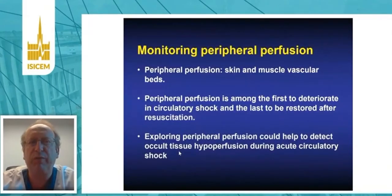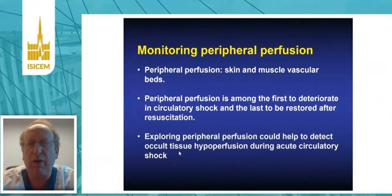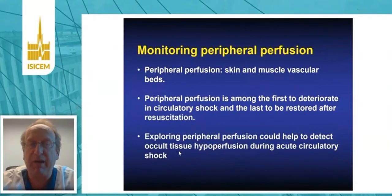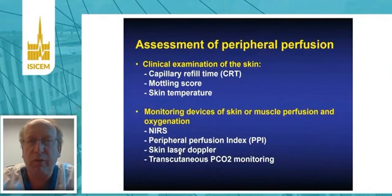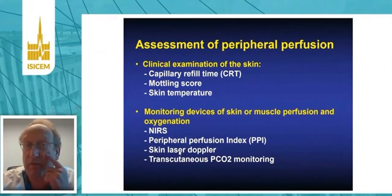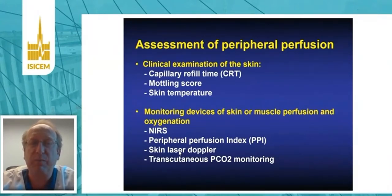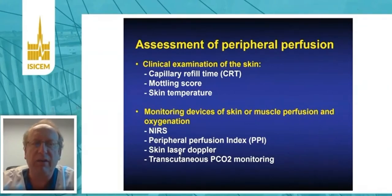Another approach to tissue perfusion monitoring is monitoring peripheral perfusion — meaning skin and musculovascular beds. Peripheral perfusion is among the first to deteriorate in circulatory shock and the last to be restored after resuscitation. Exploring peripheral perfusion can help detect occult tissue hypoperfusion during acute circulatory shock. We can assess it with clinical examination (capillary refill time, skin temperature, mottling score) or with monitoring devices, including skin laser Doppler, to assess perfusion and oxygenation of the skin and muscle.